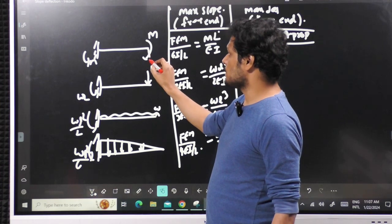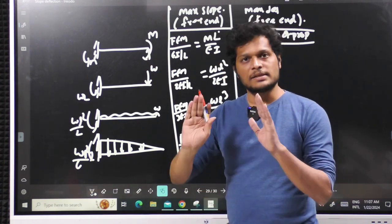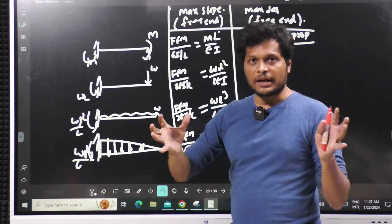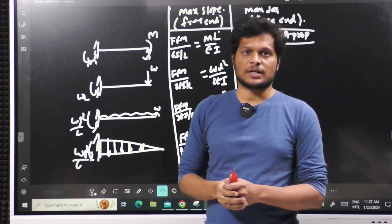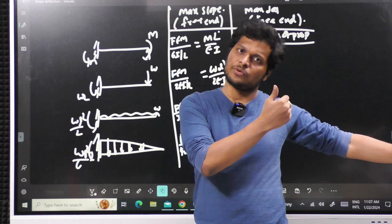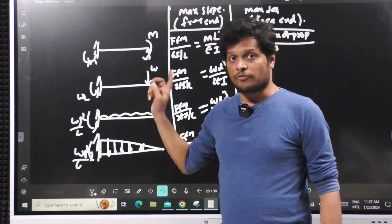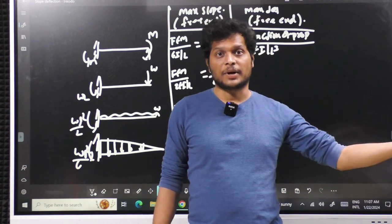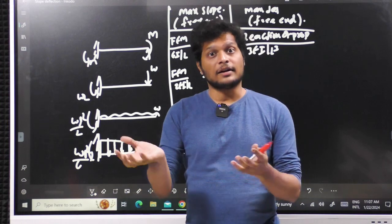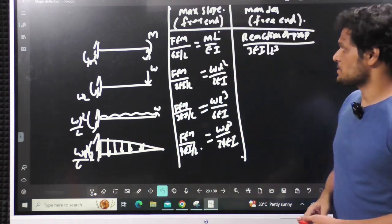By linking these two chapters there is an advantage: you already remember the fixed end moments and prop reactions from future chapters, so you can cross-derive. If you know one value and forget the other, you can indirectly derive it. That is one advantage of linking the slope/deflection and indeterminate beams chapters.